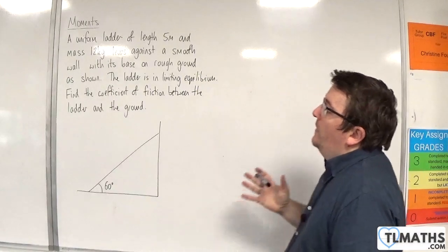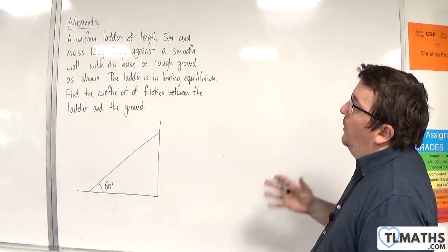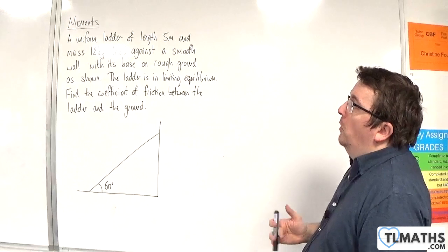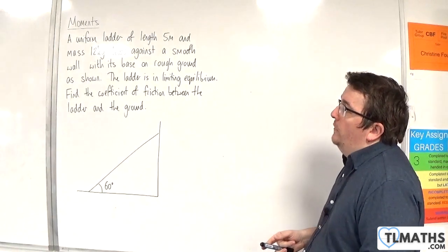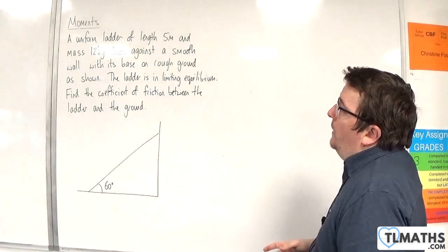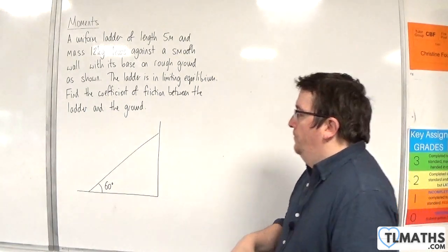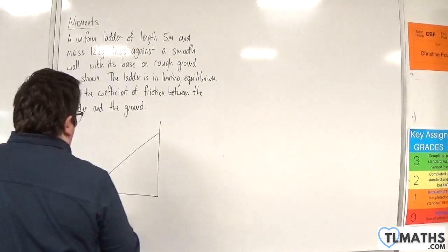In this example, we have a uniform ladder of length 5 metres and mass 12 kilos, leans against a smooth wall with its base on rough ground as shown. The ladder is in limiting equilibrium, finding the coefficient of friction between the ladder and the ground. So let's label our diagram.